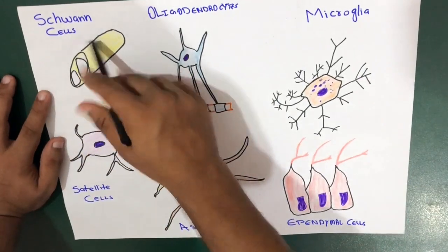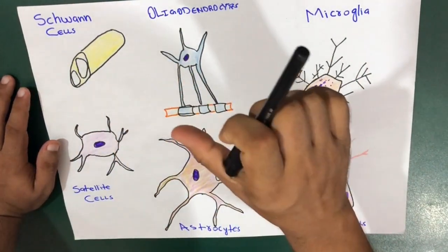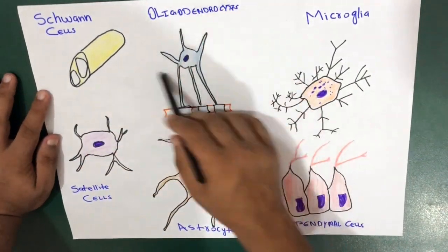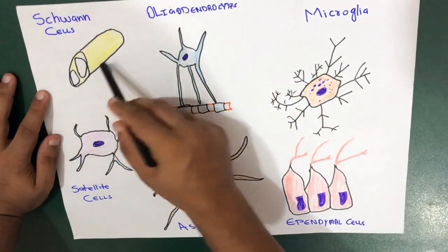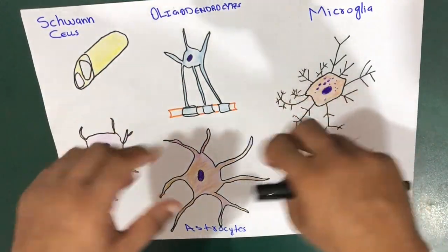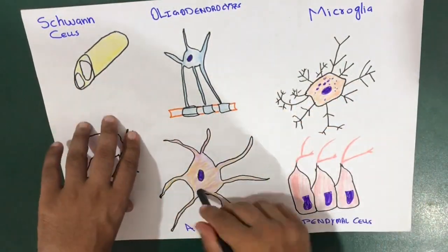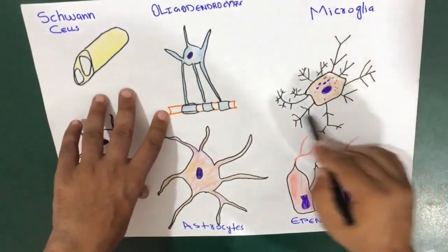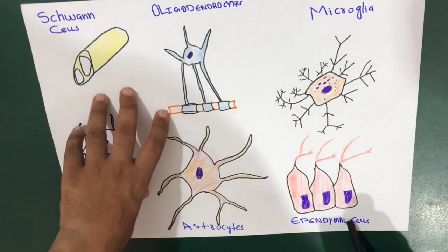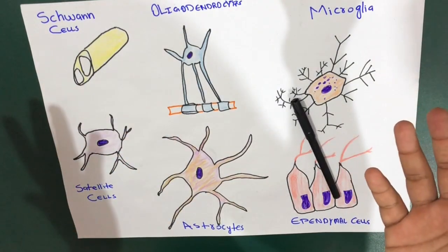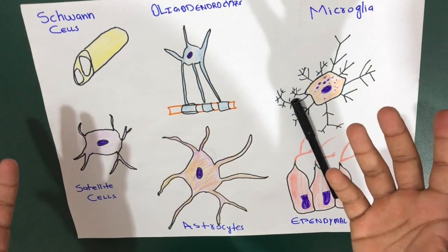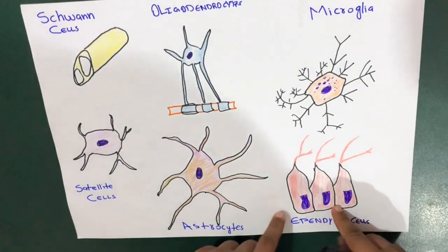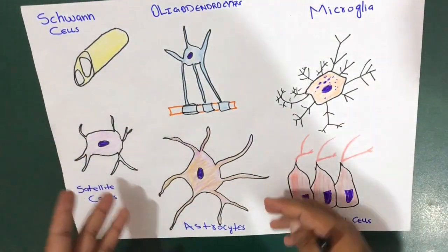Quick review: Schwann cells — peripheral nervous system, myelinate axons. Satellite cells — peripheral nervous system, regulate nutrients. Oligodendrocytes — similar function to Schwann cells but in the central nervous system, myelinate CNS axons. Astrocytes — maintain the blood-brain barrier. Microglia — remove debris via phagocytosis. Ependymal cells — release cerebrospinal fluid.